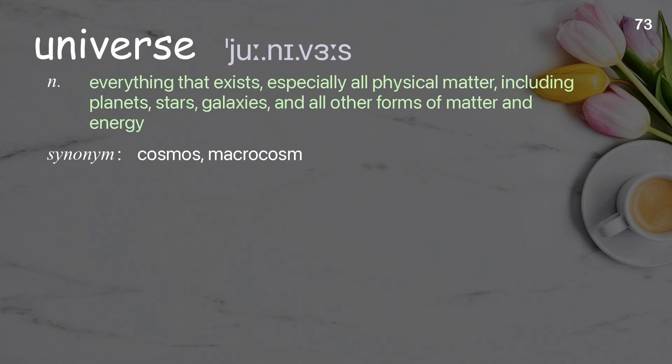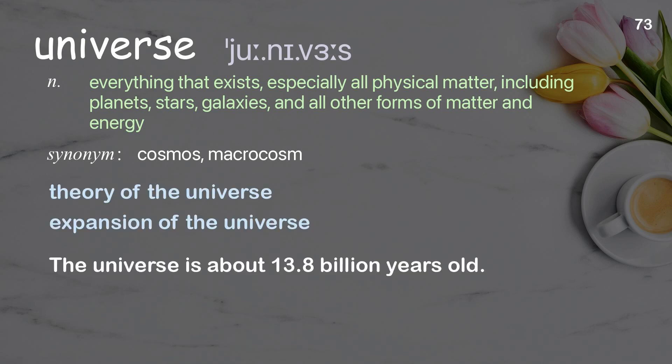Universe: everything that exists, especially all physical matter, including planets, stars, galaxies, and all other forms of matter and energy. Examples: theory of the universe, expansion of the universe. The universe is about 13.8 billion years old.